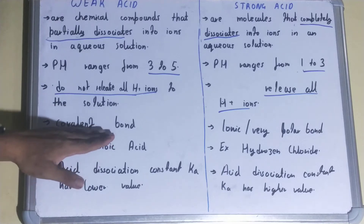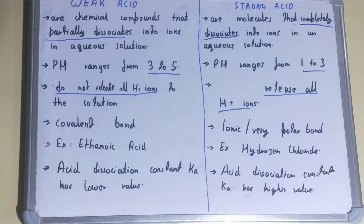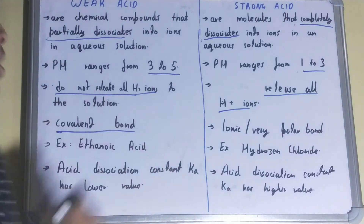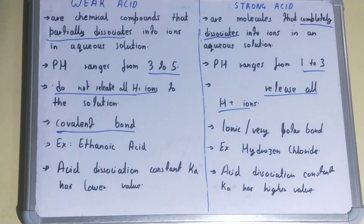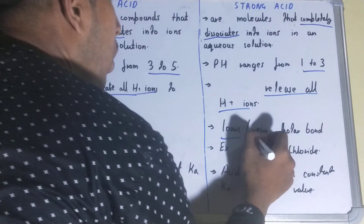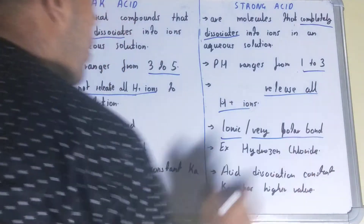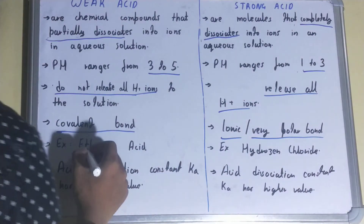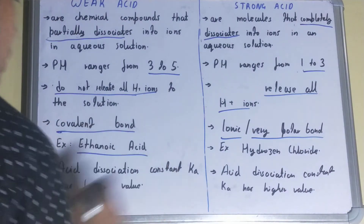Weak acids generally form covalent compounds, whereas strong acids have ionic or very polar compounds.